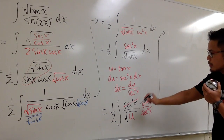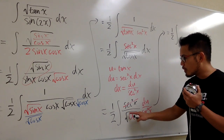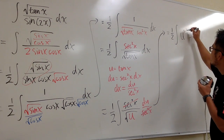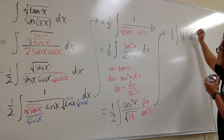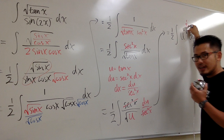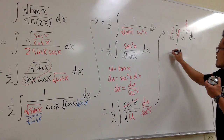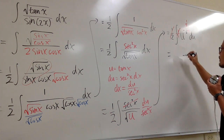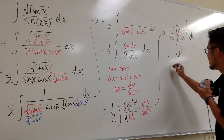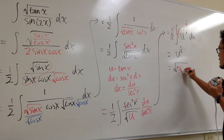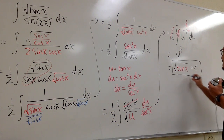This is going to equal one-half times the integral of 1 over square root of u, which is u to the negative one-half du. To integrate, we use the power rule backwards: add one to the exponent — negative one-half plus one is positive one-half — then divide by the new exponent. Dividing by one-half is the same as multiplying by two, and the one-half and two cancel. So we get u to the one-half power. Substituting back, u is tangent x, so u to the one-half is the square root of tangent x. The final answer is square root of tangent x plus C.